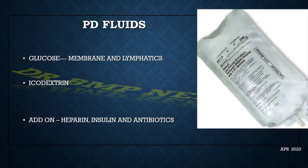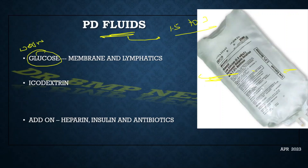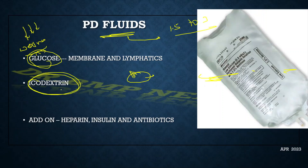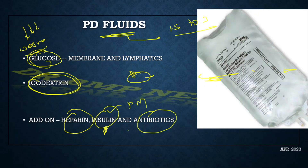Peritoneal dialysate fluid comes in bags of 1.5 to 3 liters containing electrolytes and bicarbonate. Dextrose is used as the osmotic agent to draw fluid into the peritoneal cavity, from where it is absorbed through lymphatics and peritoneal membrane. Icodextrin — a starch metabolite — can also be used as the osmotic agent. Additives include heparin to avoid clots and antibiotics for infection; insulin is mentioned in Harrison but is not used in practice due to risk of peritoneal membrane sclerosis.